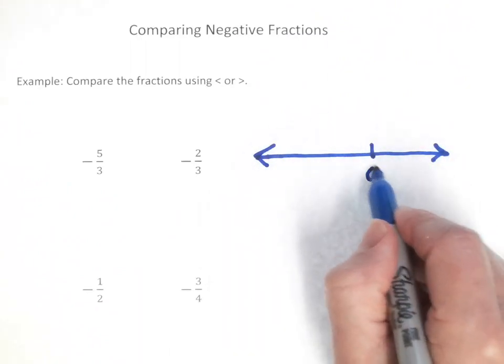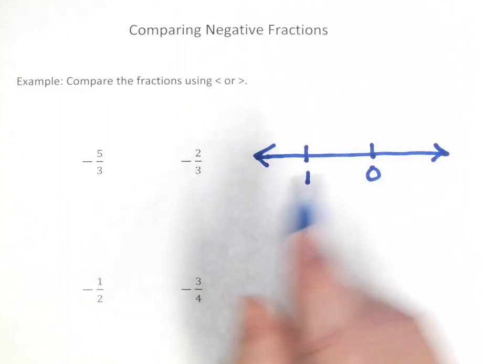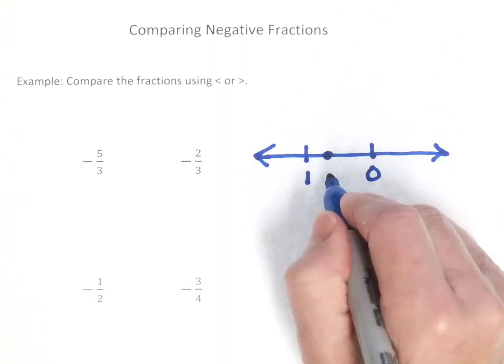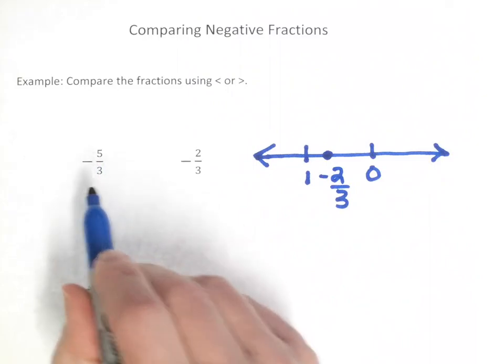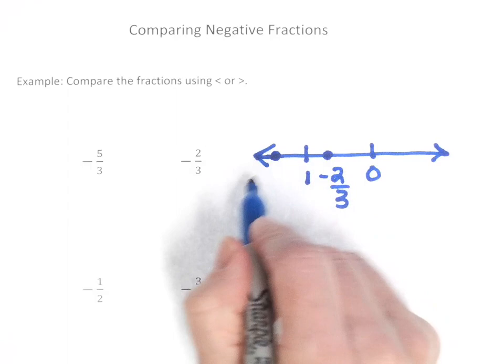So if we have zero here and one here, negative two-thirds is less than one, so it would be approximately right here. And negative five-thirds is greater than one, so it would be to the left of negative one.